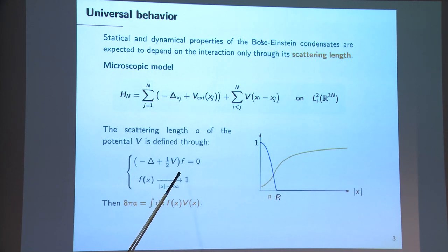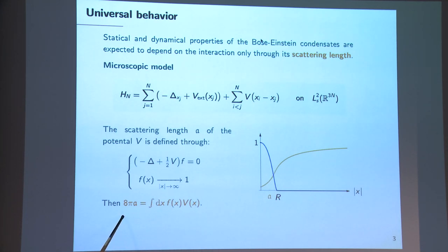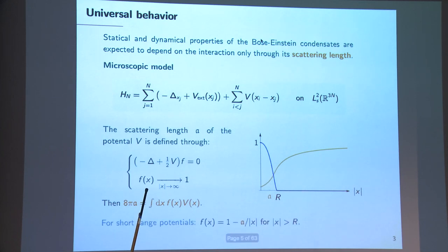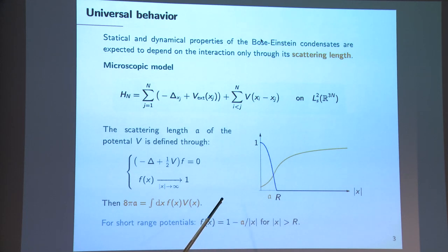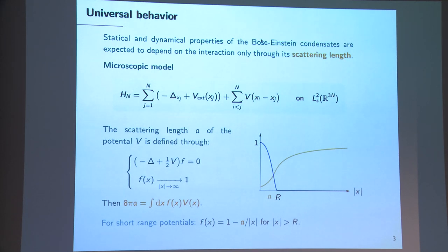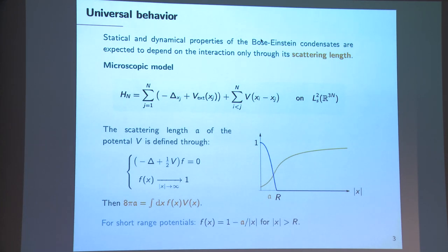Take the zero-energy scattering function for your potential, with boundary condition that f goes to 1 at infinity. Then the scattering length is proportional to the integral of the potential times the scattering function. For short-range potentials, one can solve the equation outside the range, and A appears in the asymptotic behavior at large distance. Physically, the scattering length A is an effective range of the interaction: two particles far apart see each other as if they were hard spheres of radius A, rather than the actual range of the potential.